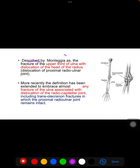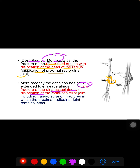Monteggia described this fracture as an upper one-third ulna fracture with dislocation of the proximal radio-ulnar joint. As already discussed, the medial bone — the ulna — sustains the fracture, which causes dislocation of the head of the radius or the radio-ulnar joint. The recent definition has been extended to include any fracture of the ulna associated with dislocation of the radio-ulnar joint.